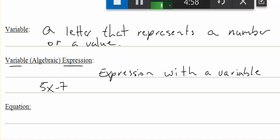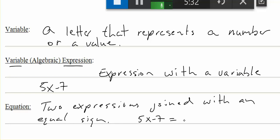An equation is just two expressions joined with an equal sign. An example of that: we can use our variable expression from above, 5x minus 7, and we could say that equals another expression, 3x plus 2. That makes an equation. Another example could be 3x equals 5. That's an equation as well.